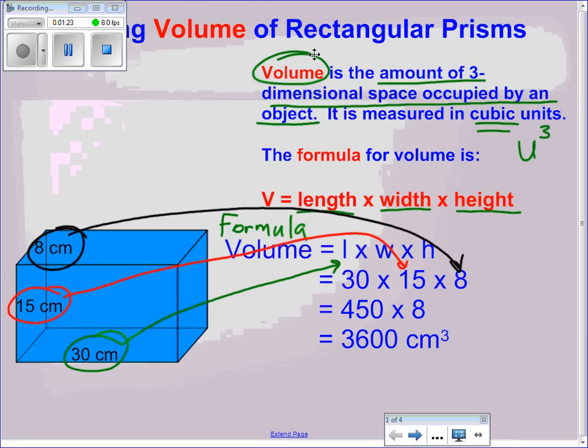When we multiply length times width times height, we can multiply 30 times 15. 30 times 15 equals 450. Then we multiply by 8 to arrive at our solution of 3600 cubic centimeters.